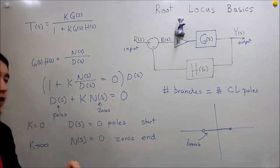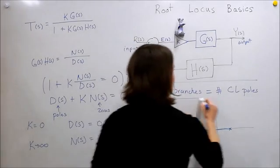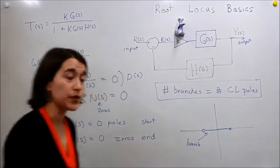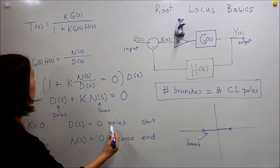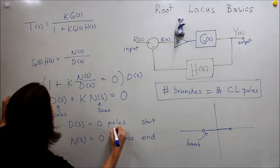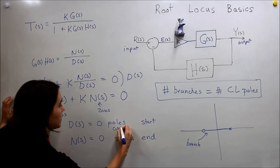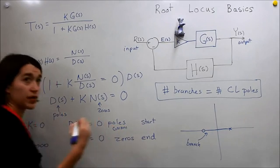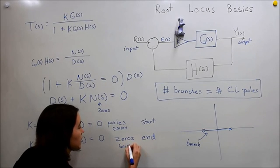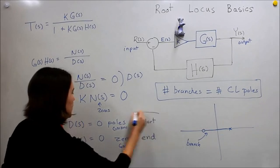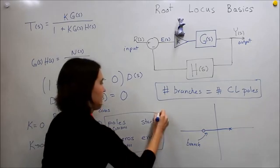So this is the basics. The important things that you need to remember here are the number of branches that we're going to see are the number of closed-loop poles, and we start at the poles of G(s)H(s). That's where we start, and we end at the zeros of our G(s)H(s) equation.